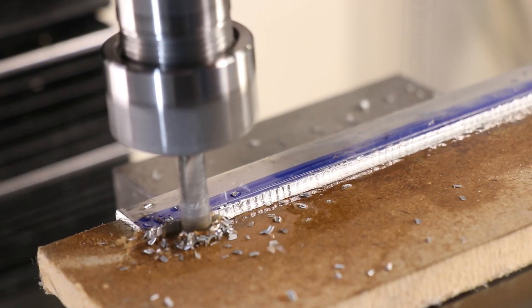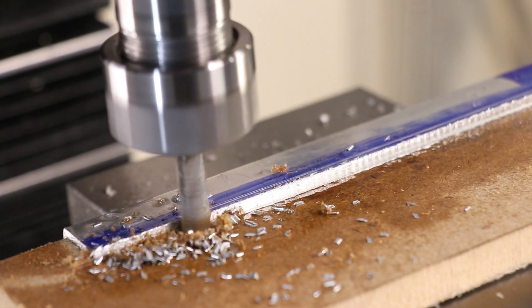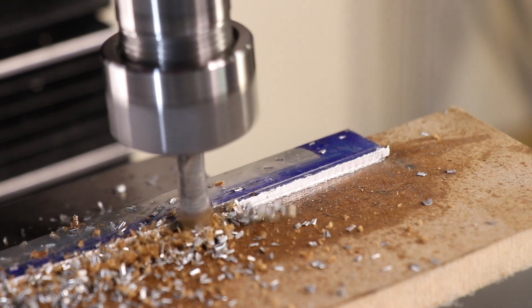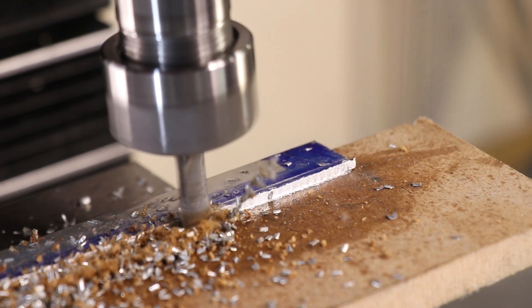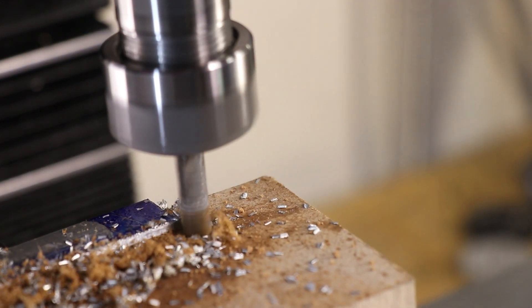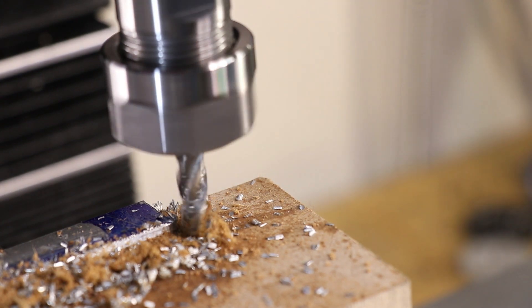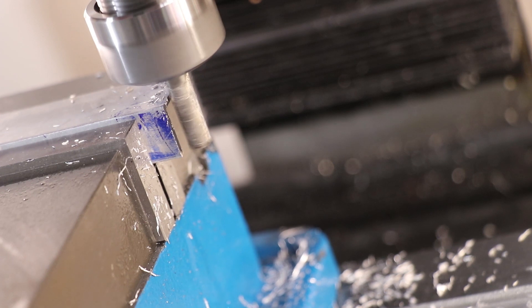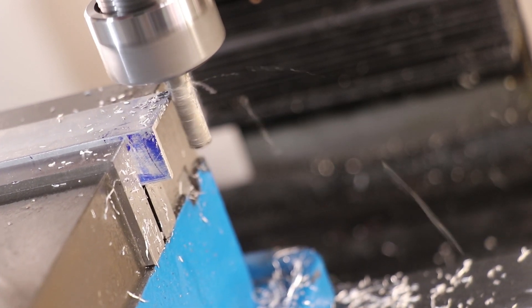Now there are a lot of ways of trimming thin stock in the mill, but my preferred method is to double side tape it to a piece of scrap wood, or MDF, and cut it in the mill. It holds it quite well, and it stops it from rattling around. I'll trim the ends, and then I'll drill three holes so I can bolt it down.